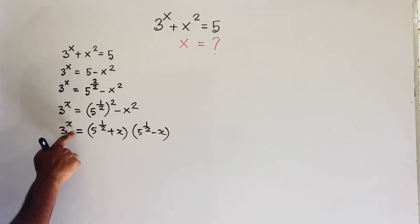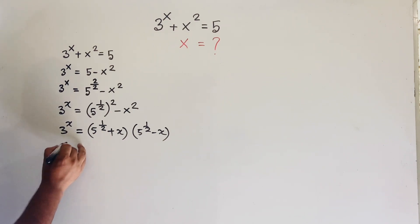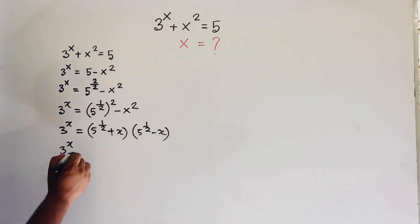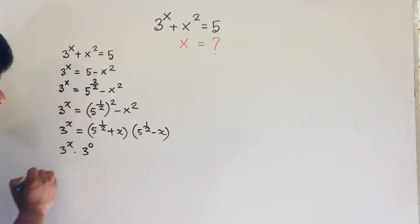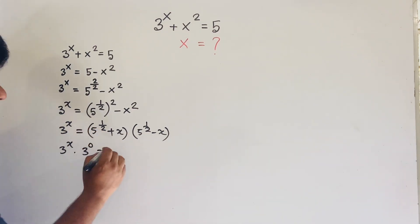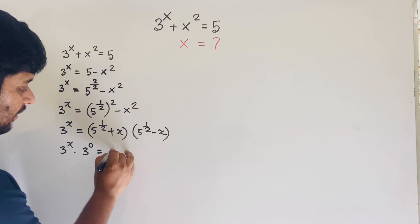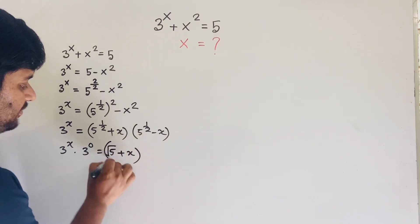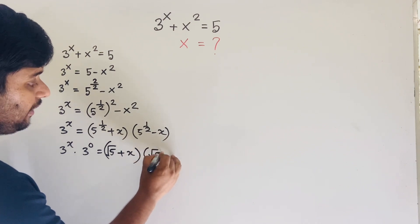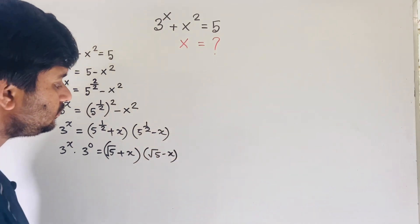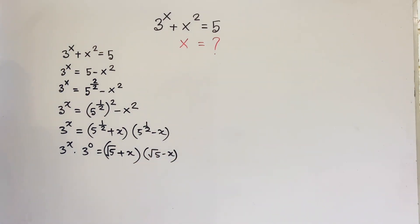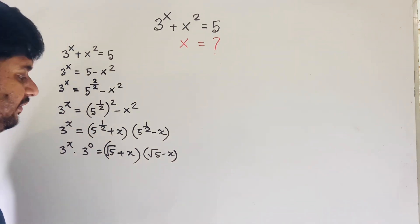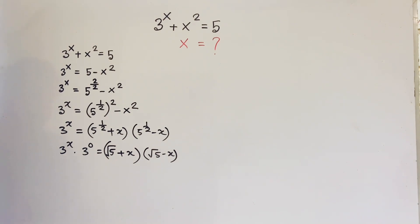At this point I write 3^x × 1, where 1 = 3^0. So we have 3^x × 3^0 = (√5 + x)(√5 - x), since 5^(1/2) equals √5.